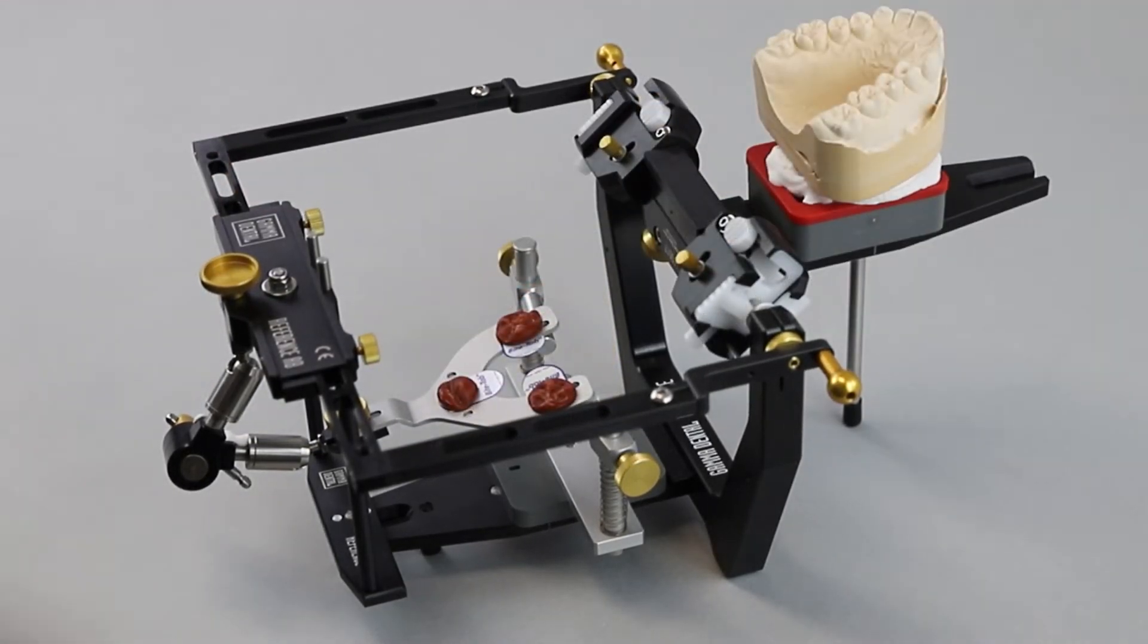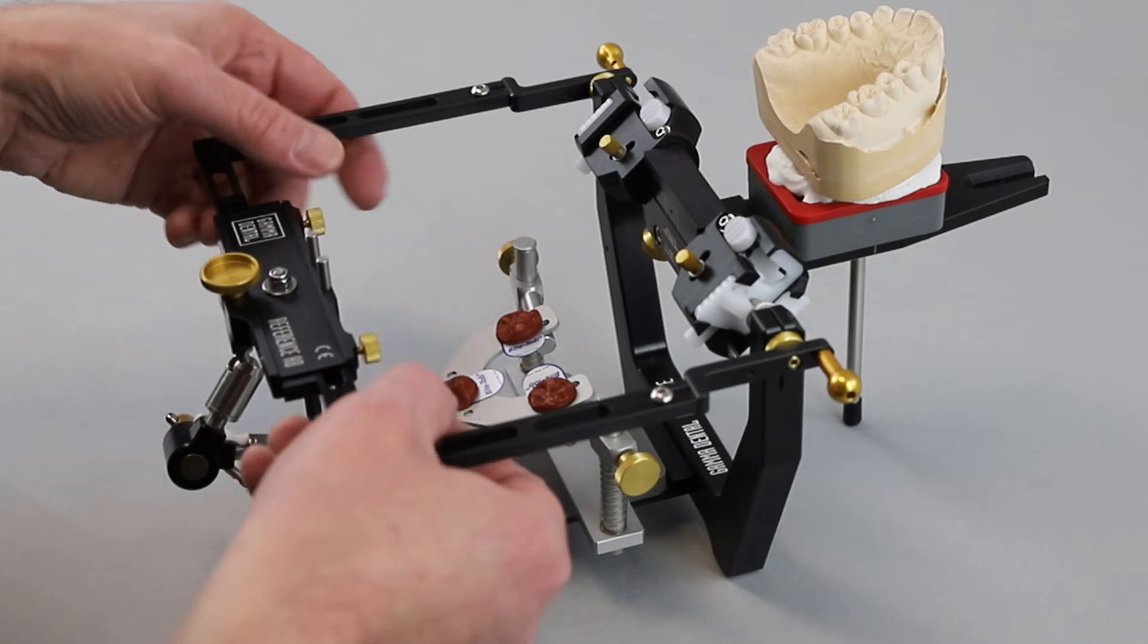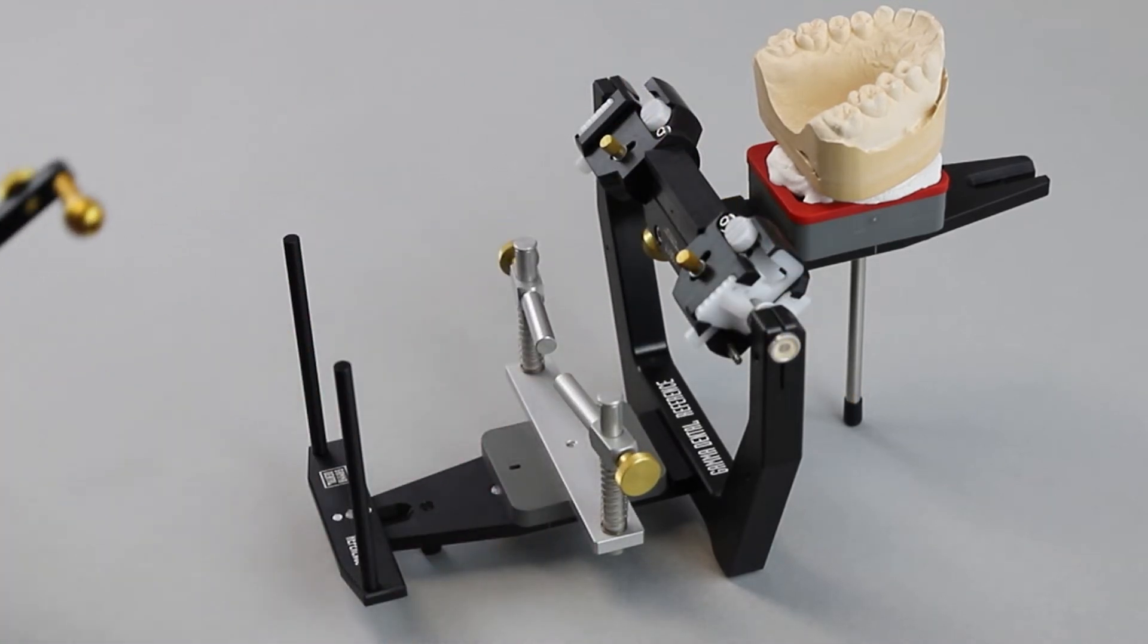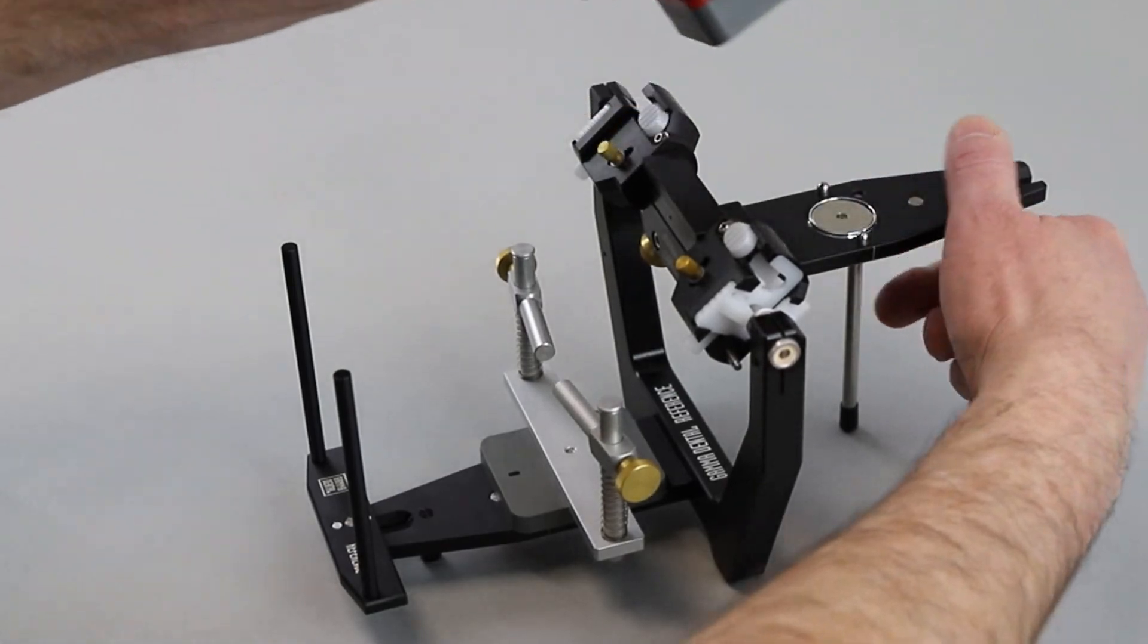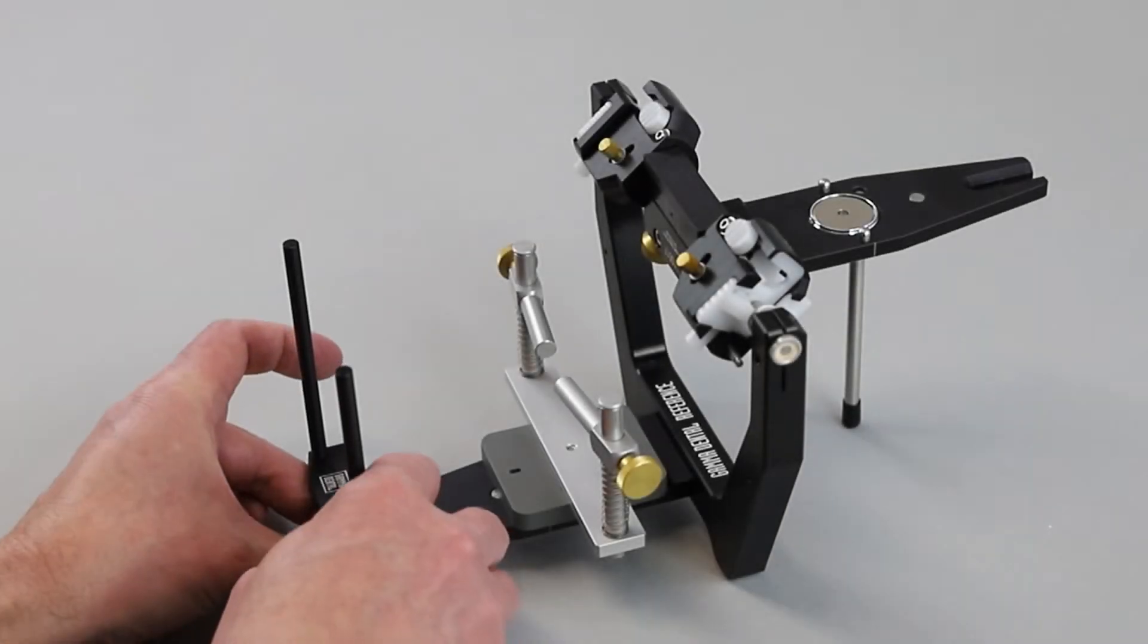Afterwards, the reference AB face bow can be removed from the articulator. The mount of the lower cast relative to the anatomic axis is carried out in the articulator.